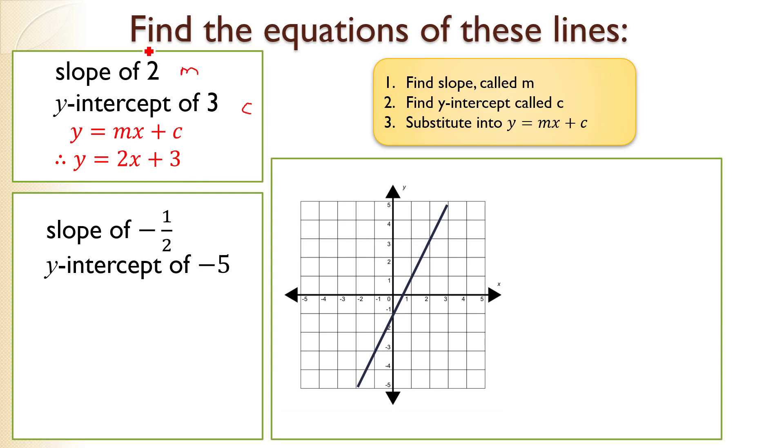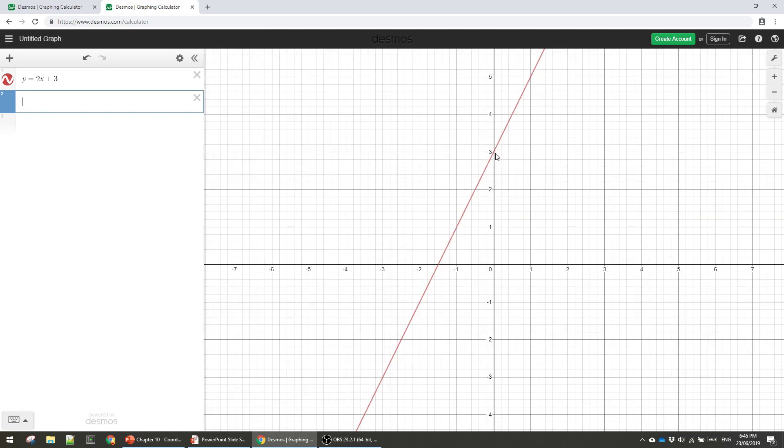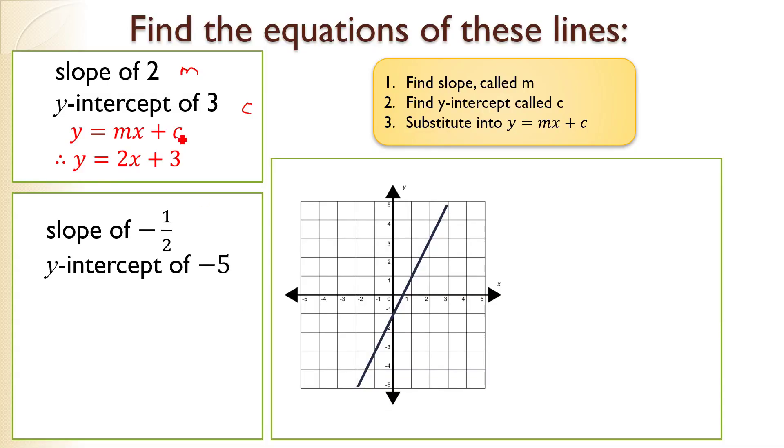If it's a bit hard to visualize what this one looks like, we can graph it. Y equals 2x plus 3 looks like this. You can see the slope really is 2—for every one unit across, I go 2 up. And it really does intersect the y-axis at 3. Brilliant. So this line has that equation.